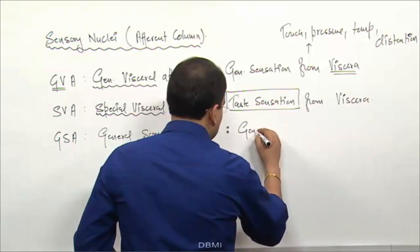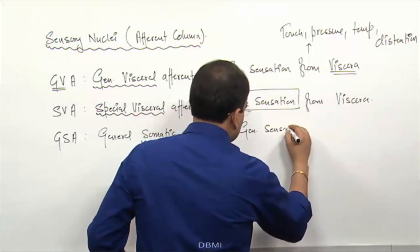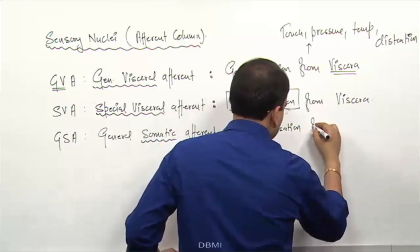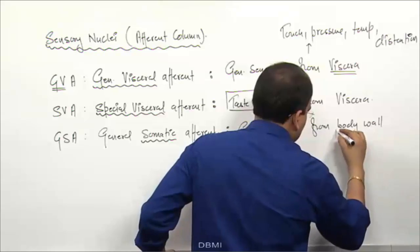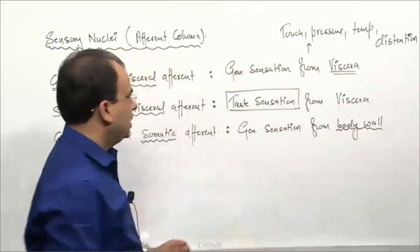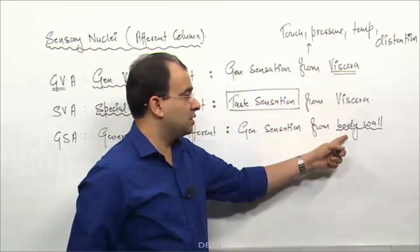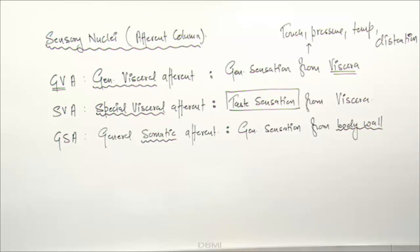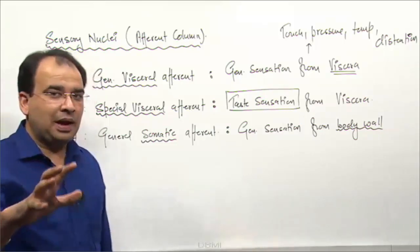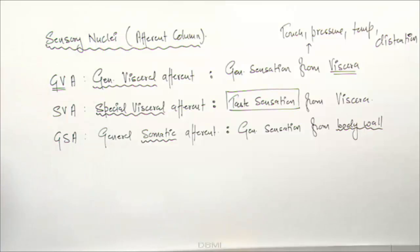That will go into the general somatic afferent column. So it is all about the general sensation from the body wall, not from the viscera this time - this time it is from the body wall. These first two are from the viscera and this one is from the body wall, from outside - general sensation only. So that is the three afferent and three efferent columns. Now all we need to do is put all these cranial nerve columns into the brainstem and we will see exactly what nuclei come under this.